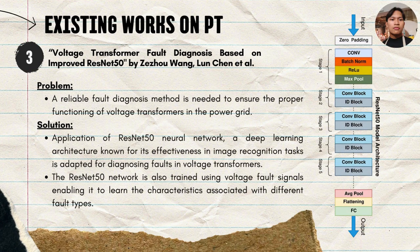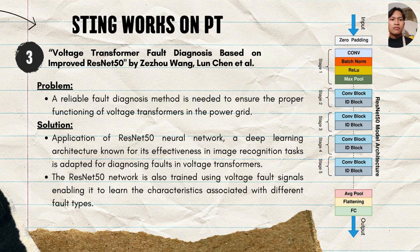The third paper is about ResNet-50. The problem is that a reliable fault diagnosis method is needed to ensure proper functioning of voltage transformers in the power grid. The solution is the application of the ResNet-50 neural network, a deep learning architecture known for its effectiveness in image recognition tasks, adapted for diagnosing faults in voltage transformers. The ResNet-50 network is trained using voltage fault signals, enabling it to learn characteristics associated with different fault types.